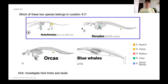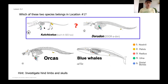What we're trying to figure out is which belongs in location one. The ones that belong in location one are going to be most closely related to the orcas and the blue whales. That's one of our key concepts: the closer they are on the evolutionary tree, the more closely related they are and the more structures they'll share. You may want to pause the video here and start to examine some of those structures to see which of these two species is most similar to orcas and blue whales.